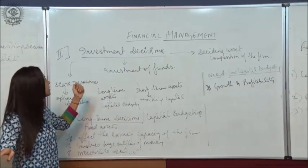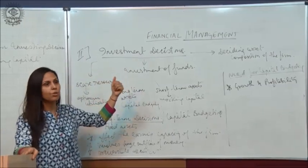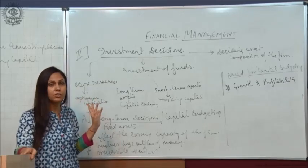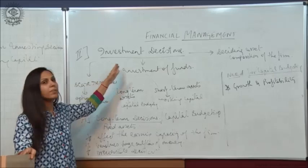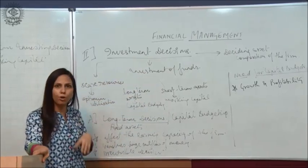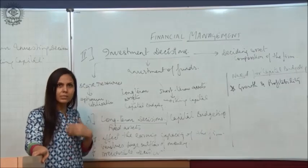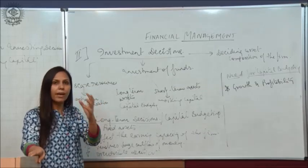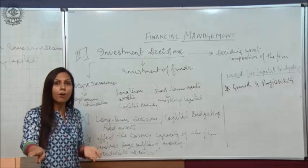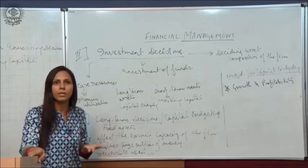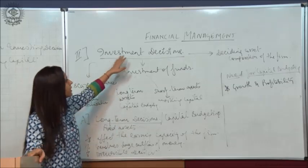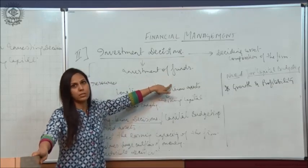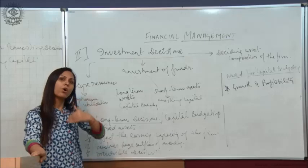Coming to the next topic, that is investment decisions. We are covering the second part of the financial decision — the first part was the financing decision, now the second part is the investment decision. Once the funds have been raised and procured, the next step is to invest those funds somewhere from where we can fetch a higher rate of return or profit. So investment decision is about where to invest those procured funds.